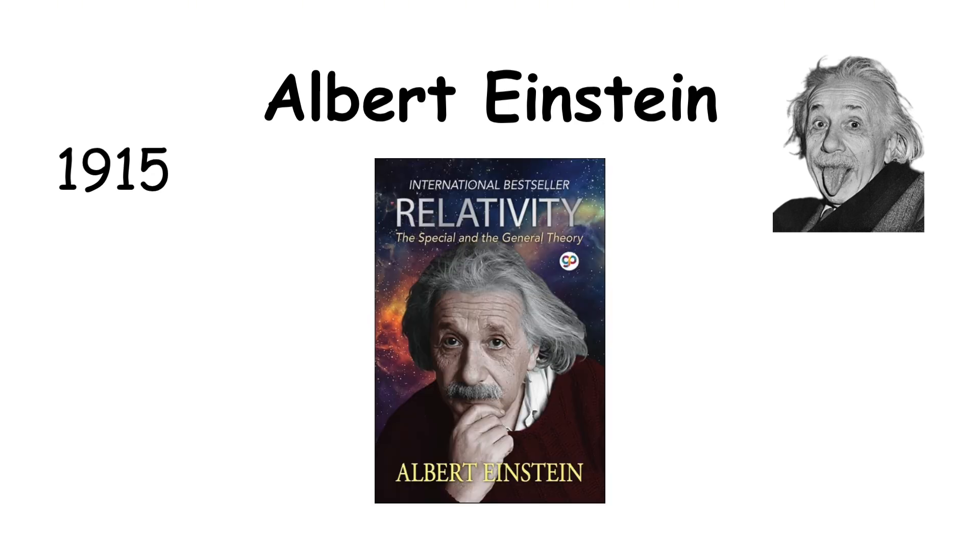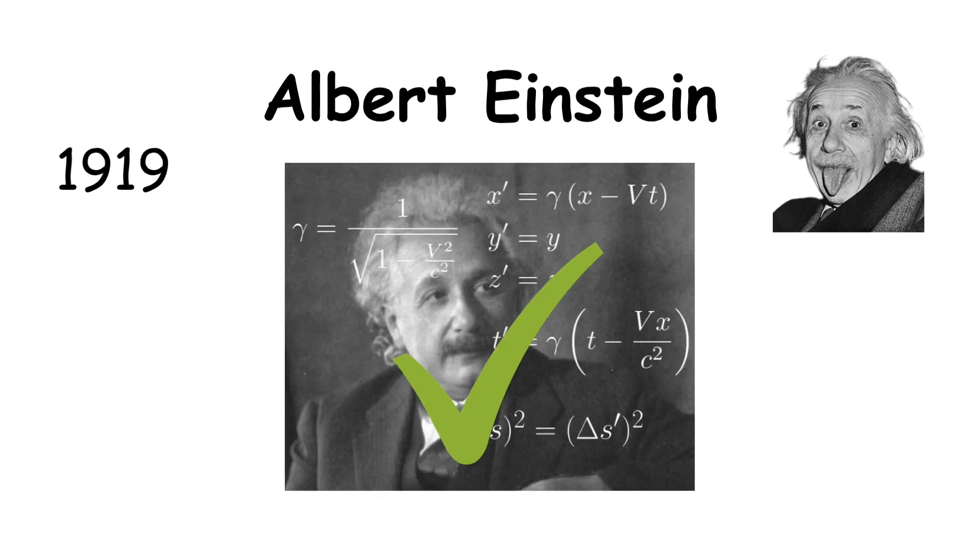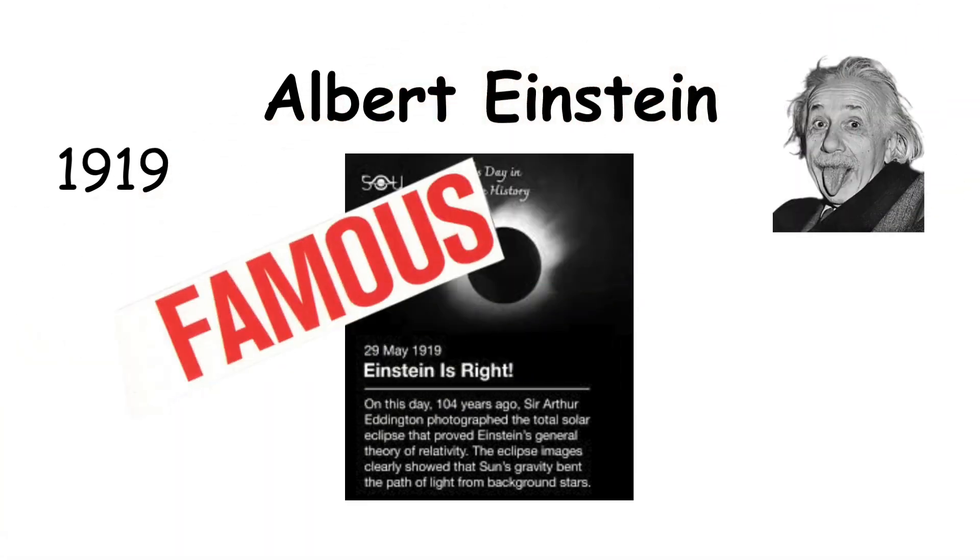In 1915, he completed his general theory of relativity, showing that gravity is the warping of space and time. His theories were later confirmed during a solar eclipse in 1919, instantly making him world famous.